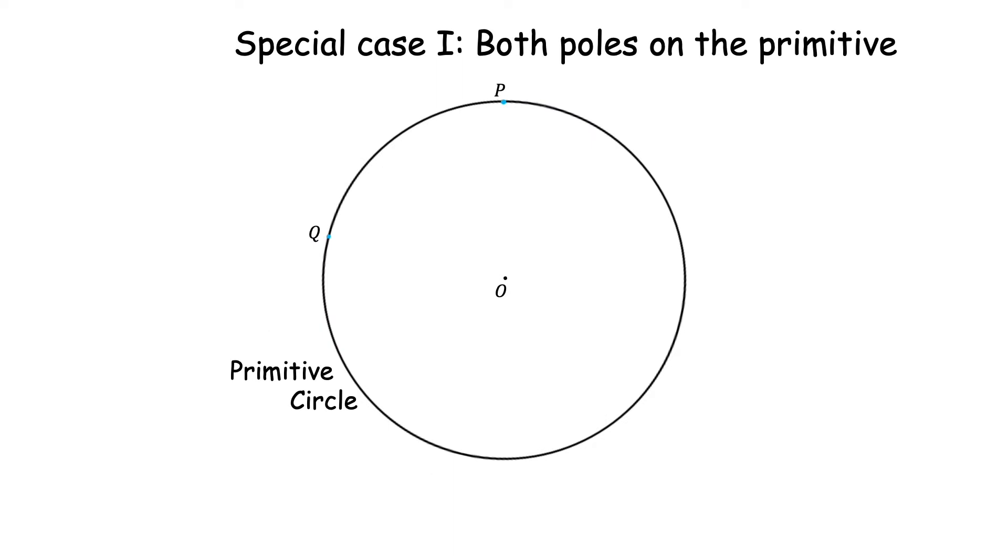To do this, let us first consider a few special cases. So if P and Q both lie on the primitive circle itself, then both of them represent horizontal directions. So the plane passing through them will be a horizontal plane and we know that horizontal plane projects as the primitive circle. So the great circle passing through P and Q is the primitive circle itself. We don't have to do anything here.